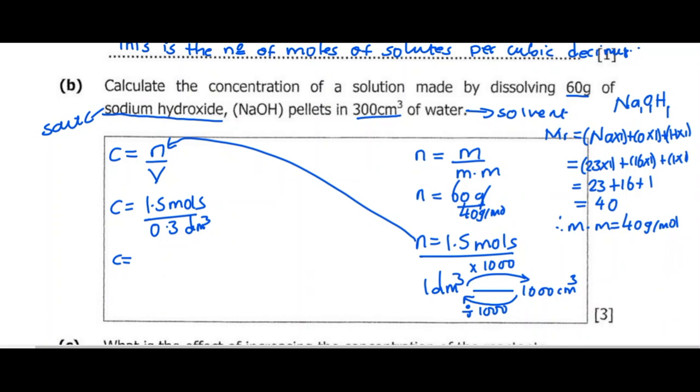1.5 divided by 0.3 gives us 5 as the final answer. The concentration is 5 moles per decimeter cubed.